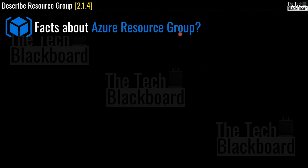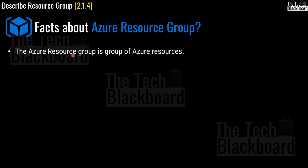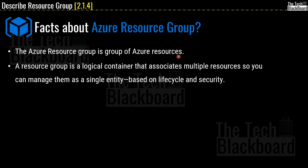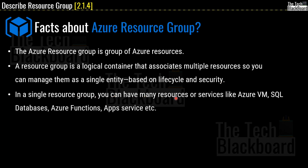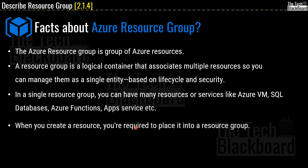Let's check out some interesting facts about resource groups. First: a resource group is a group of Azure resources that facilitates combining and managing multiple resources together. Second: it is a logical container to manage resources as a single entity based on lifecycle and security. Third: in a single resource group you can have multiple resources — Azure Virtual Machines, Azure SQL Databases, Azure Functions, App Services, and more. When you create a resource, you are required to place it in a resource group — no resource can exist without one.